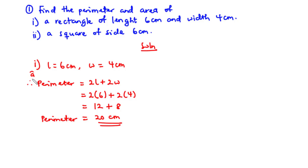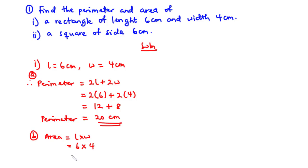Now for the area of the rectangle: the area equals length times width, which is 6 times 4 equals 24. So the area is 24 centimeters squared.